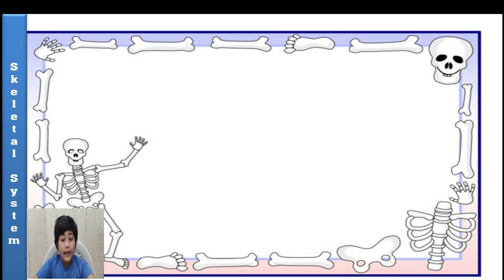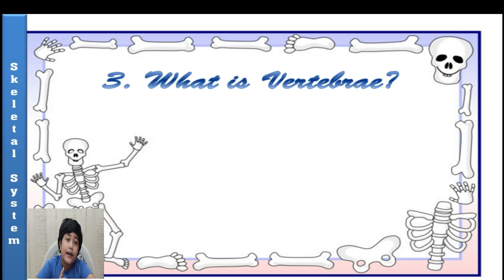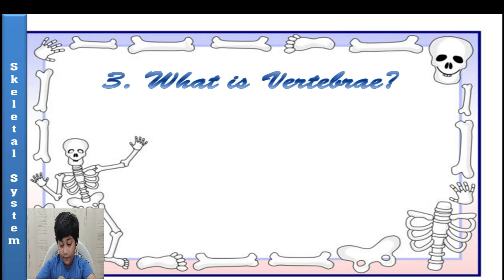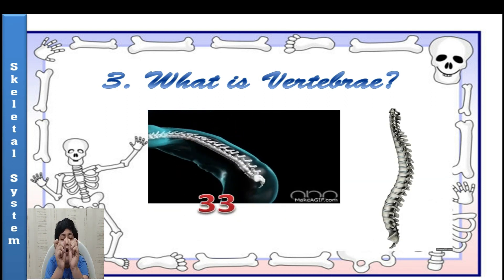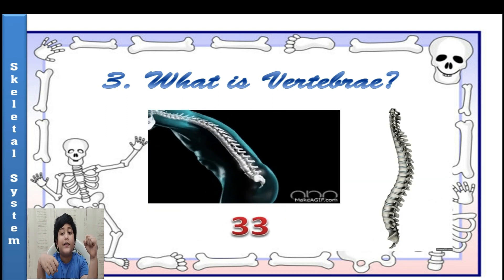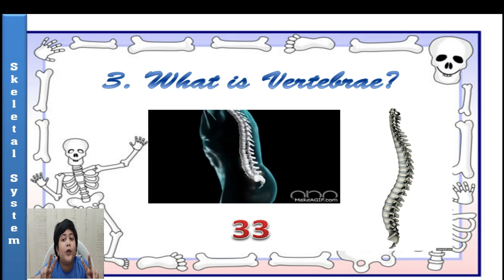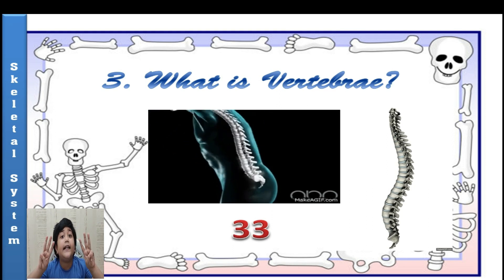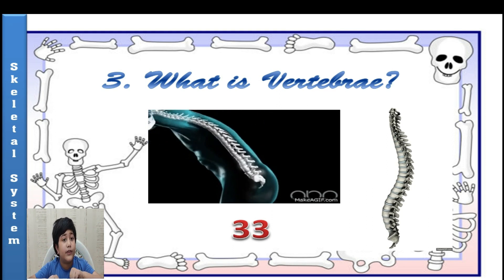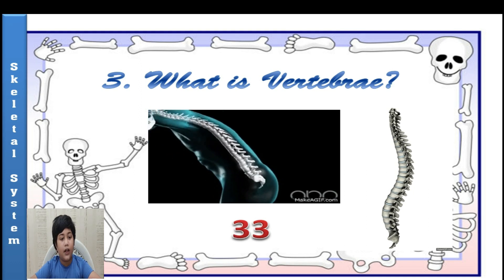Now we will know about the backbone. What is the vertebrae? The backbone or spine is made up of small bones called vertebrae. It is not made up of one or two bones — it is made up of 33 small bones, and it also protects the spinal cord.